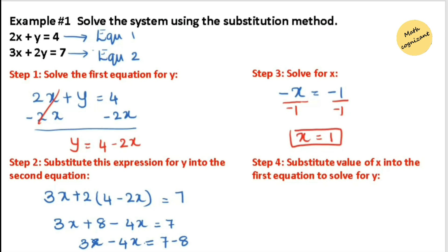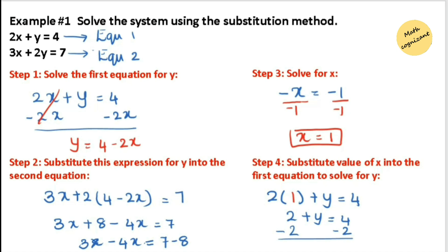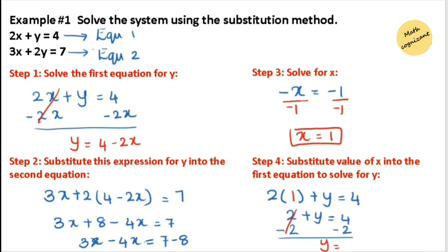In the next step we substitute the value of x to find y. I've chosen the first equation and replaced x with 1: 2 times 1 equals 2, so 2 plus y equals 4. Since this is an addition equation, we use the inverse operation — subtract 2 from both sides — and we get y equals 4 minus 2, which equals 2. So the solution is x equals 1 and y equals 2.